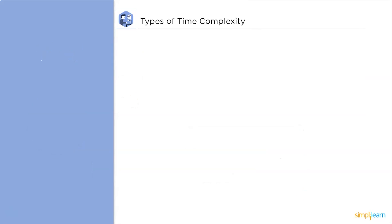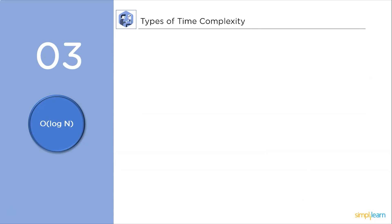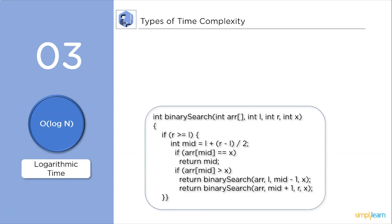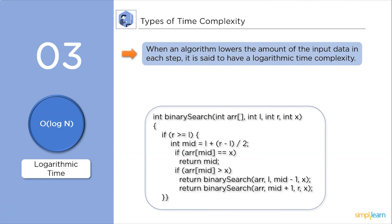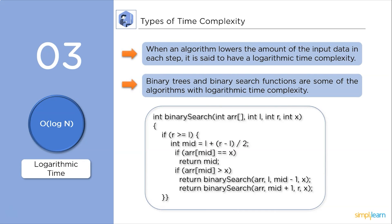Next up, logarithmic time complexity. When an algorithm lowers the input data in each step, it is said to have logarithmic time complexity. Binary trees or binary search functions are some of the algorithms with logarithmic time complexity. As you can see in this code, by finding out the mid in every iteration, the run time will decrease every step, making it approximately logarithmic run time.